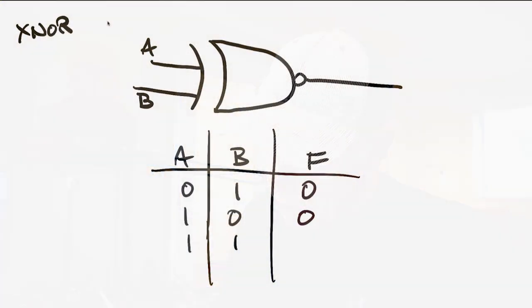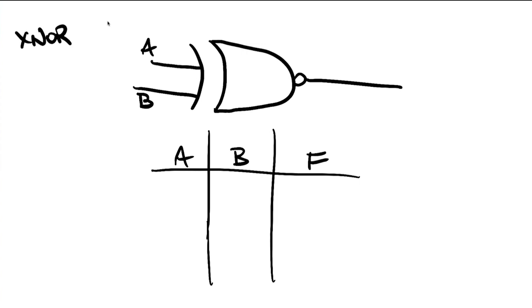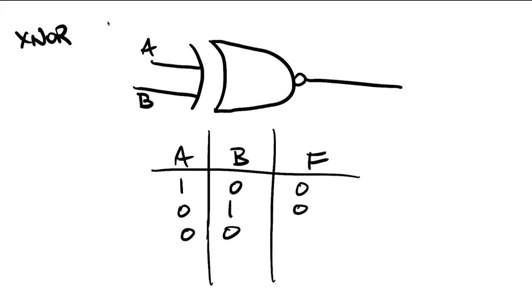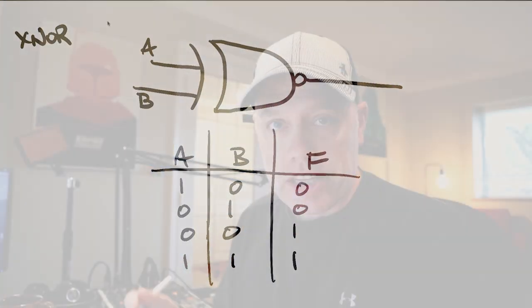Last one — this is the XNOR gate. It's the same shape as the exclusive OR but with this little nub at the end. One and zero — gave me one before — now gives me a zero. Zero and one — gave me one before — now gives me a zero. Zero and zero — gave me zero before — now gives me a one. And one and one gives us a one. The exclusive NOR: the opposite of the XOR, the negative version of the exclusive OR.